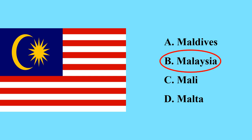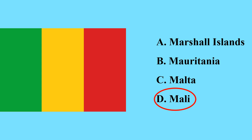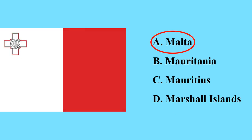This is the flag of Malaysia — it is a country in the South Pacific region in Asia. This is the flag of an island country in Asia called the Maldives — it is an island in the Indian Ocean.